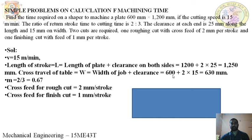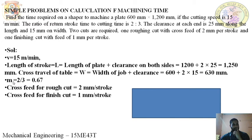The length of stroke in the widthwise direction is 630 mm and the length of stroke is 1250 mm. The ratio M is 0.67, since 2 divided by 3 is 0.67. M is the ratio of return stroke to the cutting stroke.